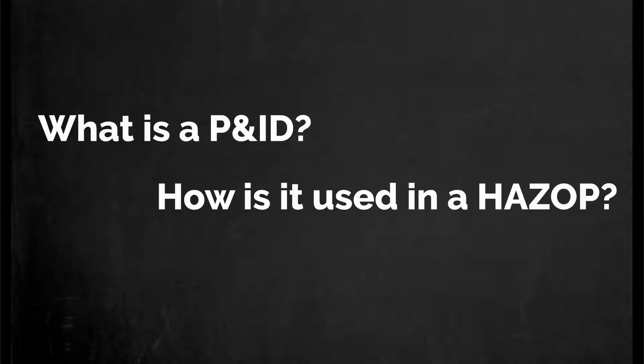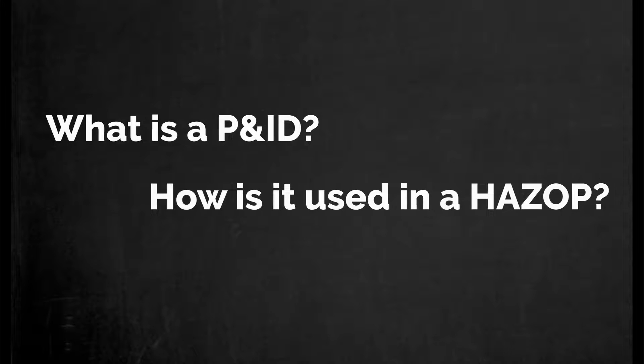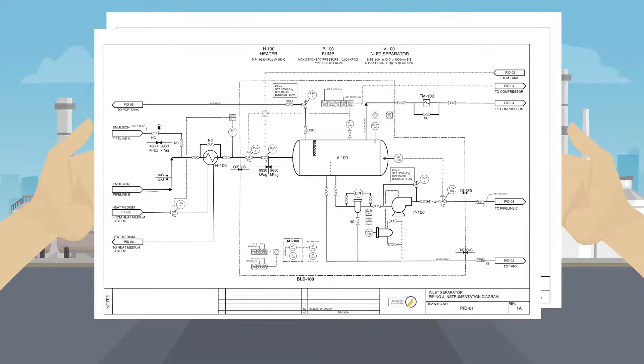Let's start by asking, what is a PNID and how is it used in a HAZOP? A PNID is a schematic representation of a process, using symbols and piping connections to demonstrate how pieces of equipment are connected and the direction of the process flow between components in the system.